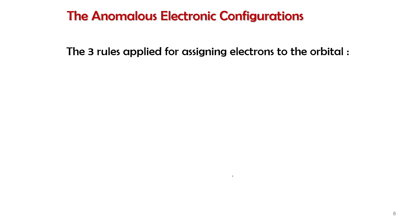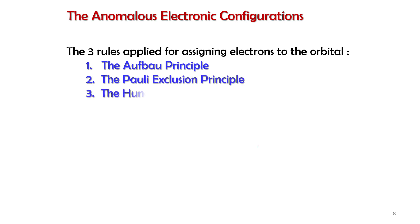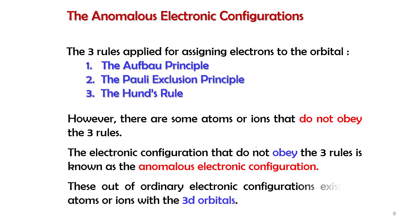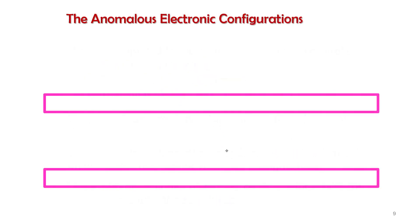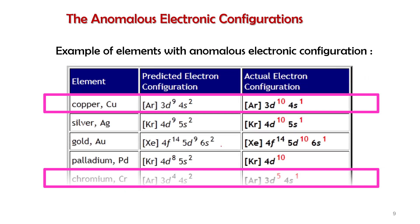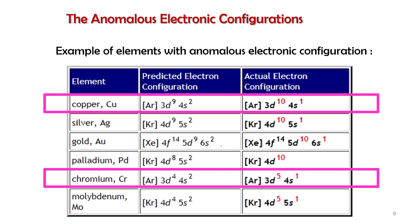Next is anomalous electronic configuration, which applies to transition elements. Usually we apply the three rules, but not all atoms obey them. We will look at elements involving the 3d orbital — within our syllabus, we take copper and chromium as examples.